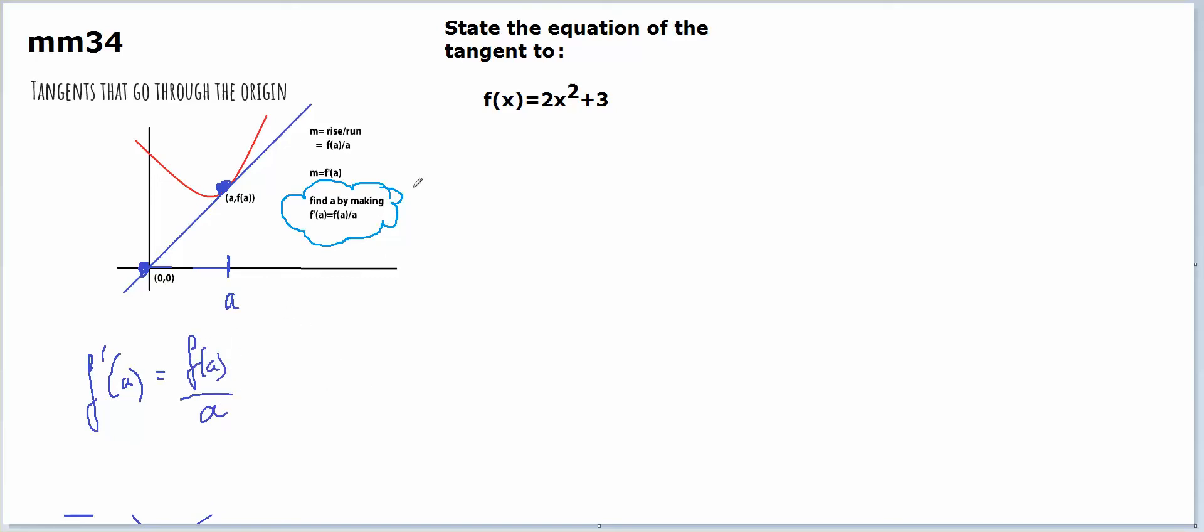Let's look at an example where my function is 2x squared plus 3, and it's a parabola that looks like this. Now I'm looking for tangents, and there's one tangent that would run like this, touching at this point here. In actual fact, I'm going to have one on the other side, so I'm going to get two tangents in this particular question, one touching here and one touching here that also go through the origin.